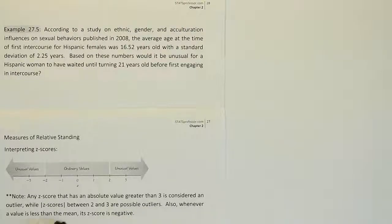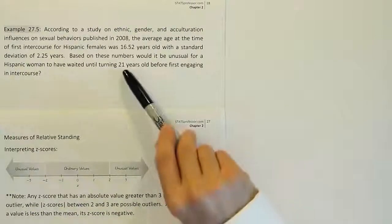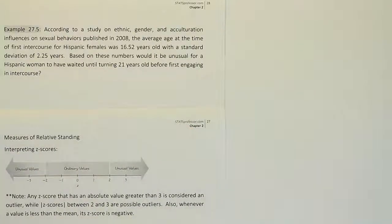Also, whenever a value is less than the mean, its z-score is negative. So let's go ahead and use this scale here to try to figure out if the data provided here would make a woman who waited until 21 years old unusual. So let's figure that out by calculating the z-score for that scenario.